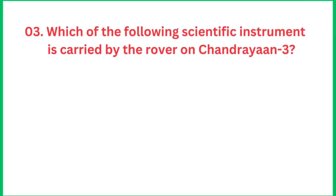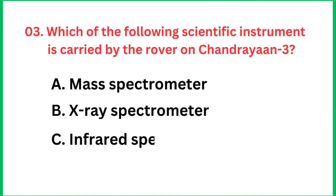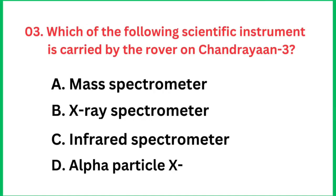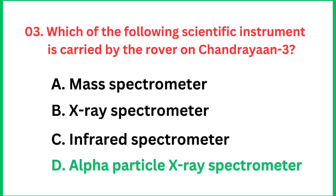Which of the following scientific instruments is carried by the rover on Chandrayaan 3? The correct answer is the Alpha Particle X-ray Spectrometer, APXS.